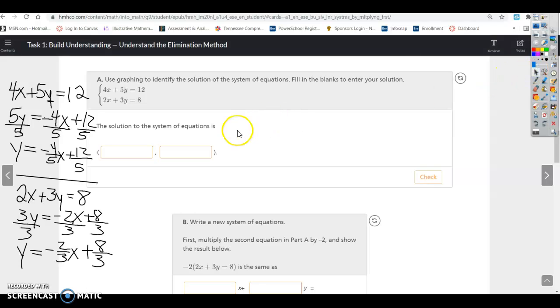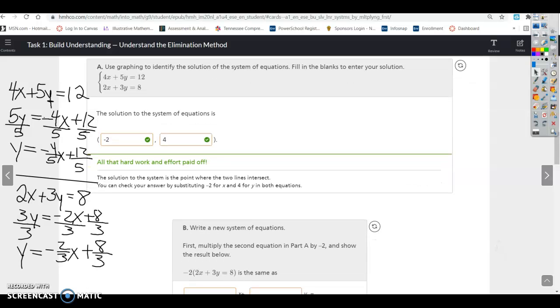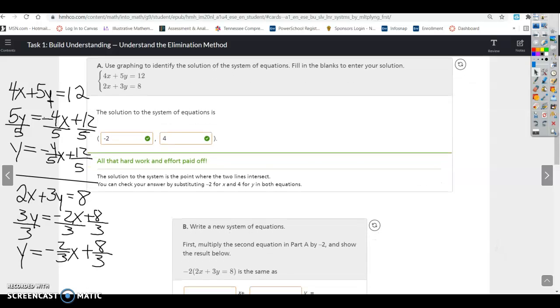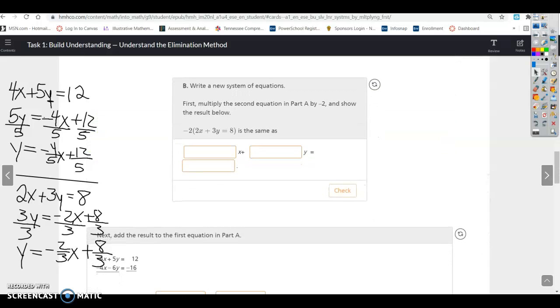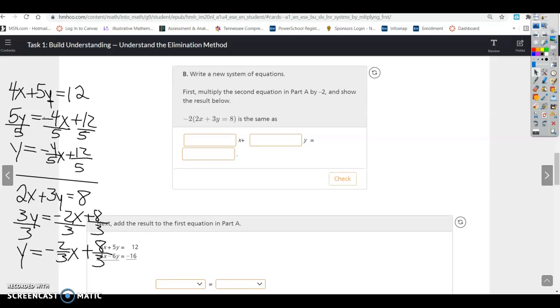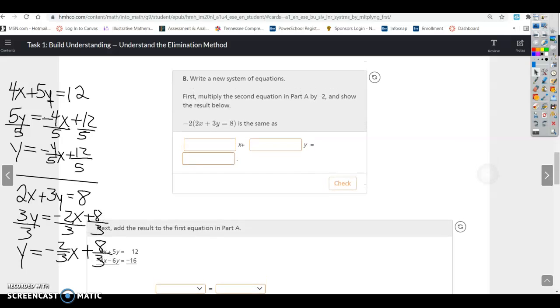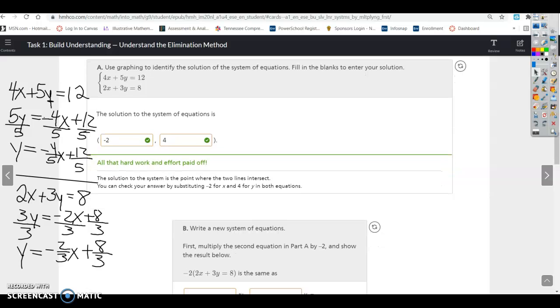So negative 2, 4. So that was the intersection point. So that's how you do it if you want to do it with graphing. Write a new system of equations. First, multiply the second equation in part A by negative 2. So now we're going to do it using elimination. So we've got these same equations here.